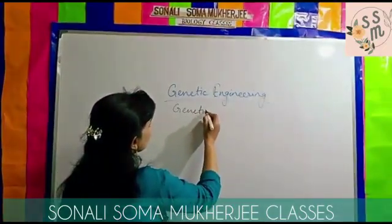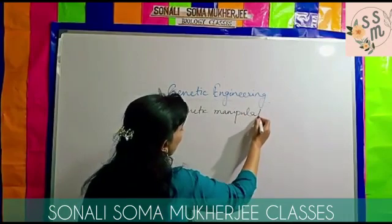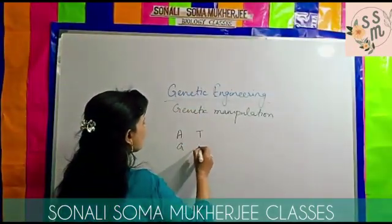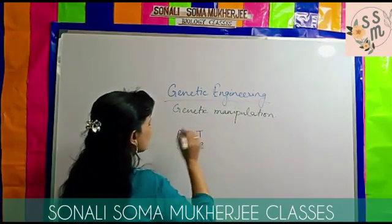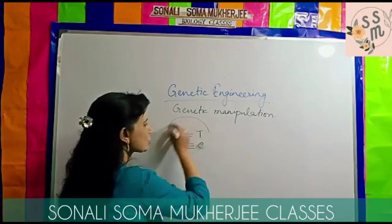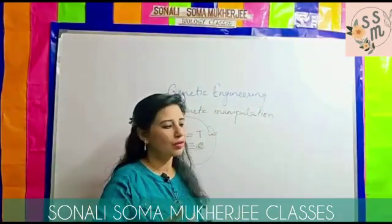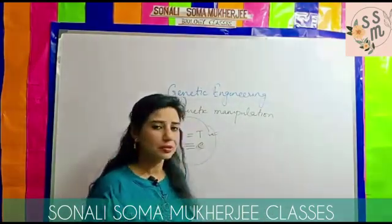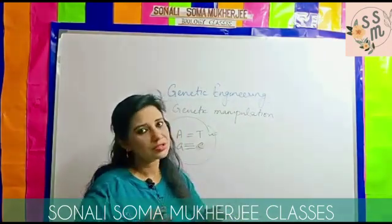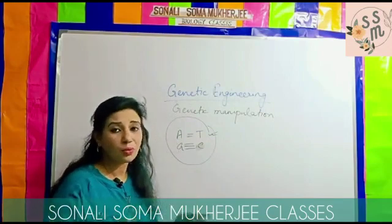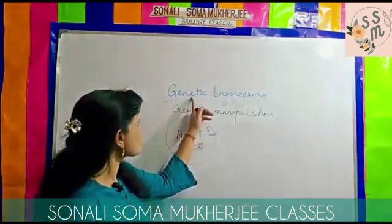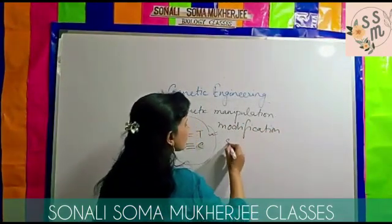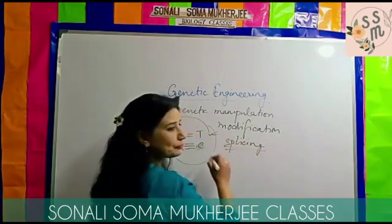Other names could be genetic manipulation — that is, modification of the gene structure. We know that genes are basically all about A, T, G, and C. AT has two hydrogen bonds and GC has three hydrogen bonds. The basic structure remains the same. Genetic engineering is also referred to as modification of genes, splicing, and recombinant technology.